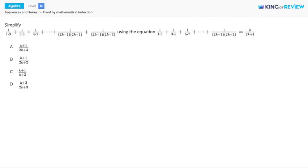Hi, this is King of Review. Here we're given an equation: 1 over 1 times 3 plus 1 over 3 times 5, all the way up to 1 over 2k minus 1 times 2k plus 1, and we're told that equals k over 2k plus 1.